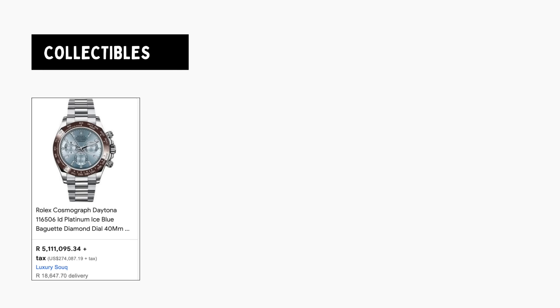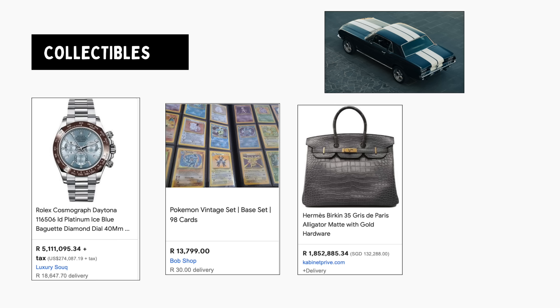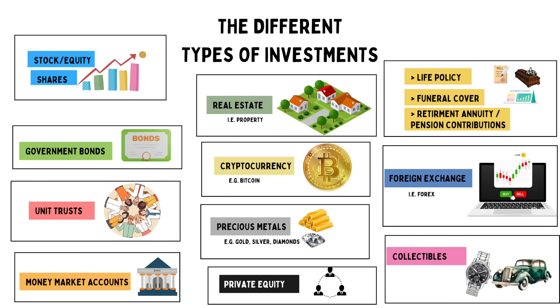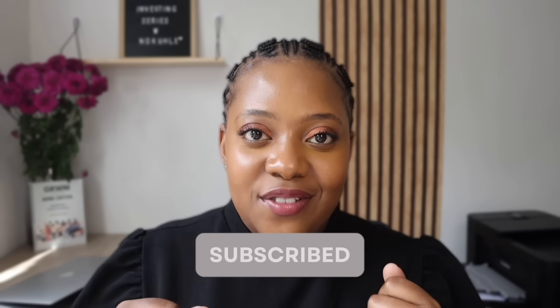Collectibles include things like Rolex watches, Pokémon cards and comics, branded bags, vintage cars, art, and sports memorabilia. With collectibles, it is a very unpredictable type of investment — you and I are not really sure what collectibles will matter in the future. So I will not be touching on those over the next few weeks. However, if you're interested in the rest of the investments I've mentioned, make sure you hit the subscribe button because I'll be covering those over the next few weeks.